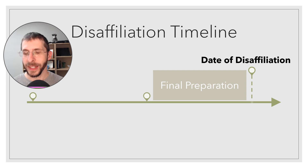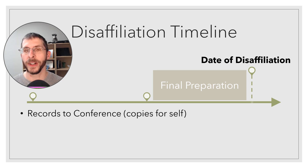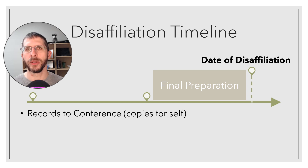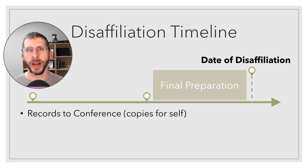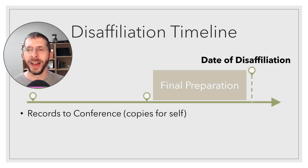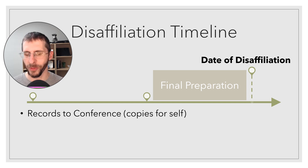Some other things to think about: get the records ready for the conference. Per the disaffiliation agreement, the conference gets the original historical records, so make copies for yourself. You may be handing them over to a district superintendent or to a church that's staying United Methodist rather than taking them to a conference office, so work that out to make sure those records are cared for.